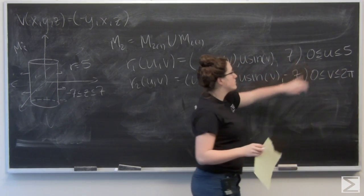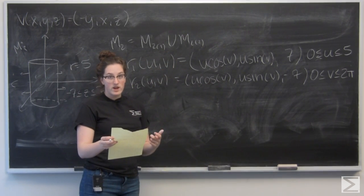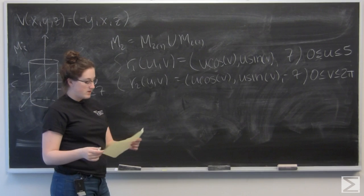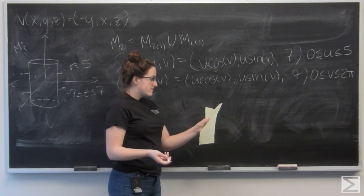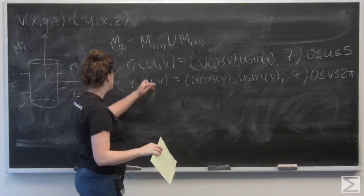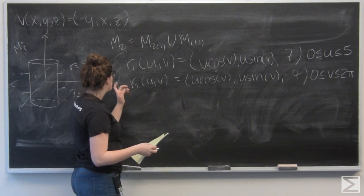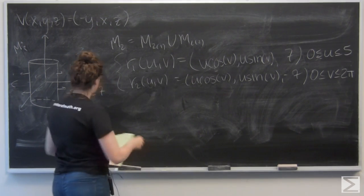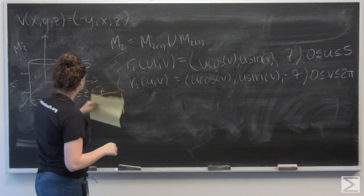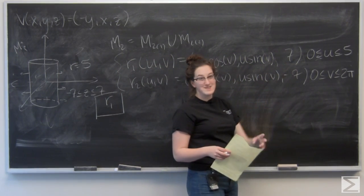Those intervals are the same for both R1 and R2. Now I want to calculate the flux of V over M2, those two circles. To do that I'll use the definition of flux, which is the double integral over the area of F, the vector field evaluated at the parametrization, dotted with R_U cross R_V. Let's do R1 first and find F of R1 — everywhere I see an X I put U cosine V, everywhere Y I put U sine V, everywhere Z I put 7.